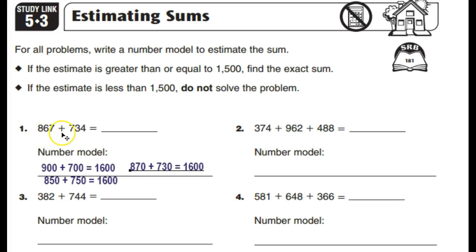So, let's go ahead and do 867 plus 734. I go ahead and solve this problem using the standard algorithm. 7 plus 4 equals 11.